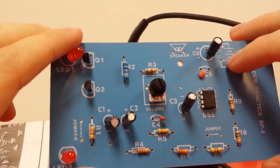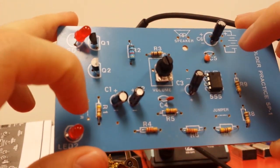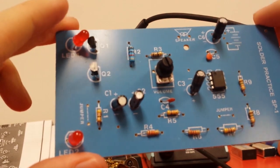Look at this thing. We're still missing a few things. We're missing the speaker, we're missing the battery, and we're missing two things called jumpers.